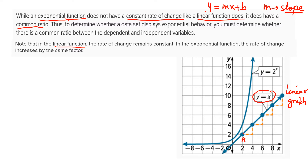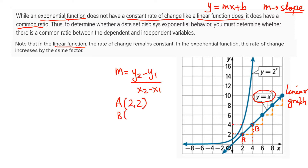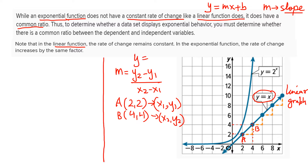Take any two points on the line, say point A with coordinates (2, 2) and point B at (4, 4). Using the slope formula with x₁, y₁ = (2, 2) and x₂, y₂ = (4, 4): slope = (4 − 2) / (4 − 2) = 1. So the rate of change is constant — it is the same. Even if you take any other two points, the slope will be the same. Now for an exponential function, it does not have a constant rate of change — this is a very important point of difference.